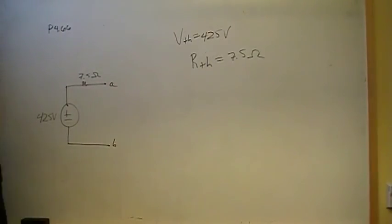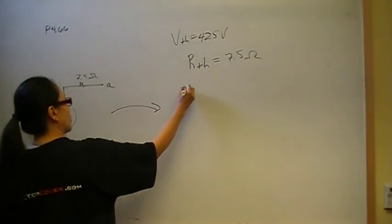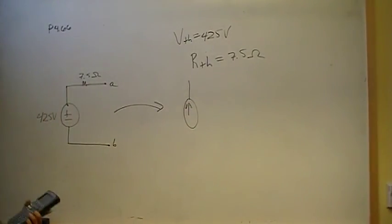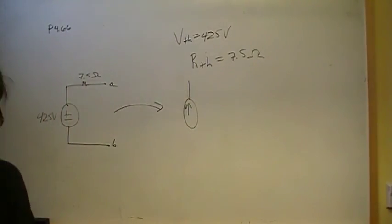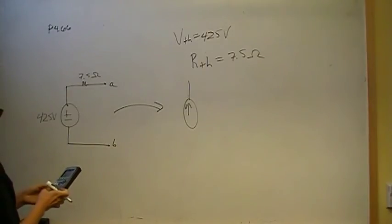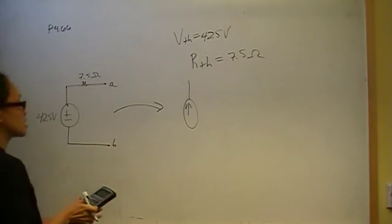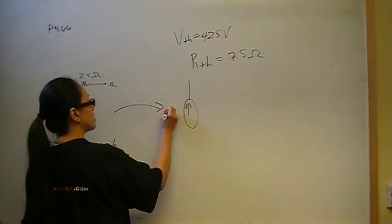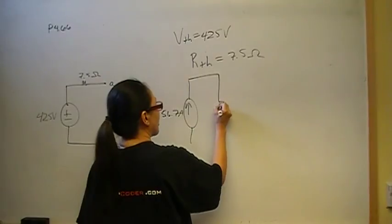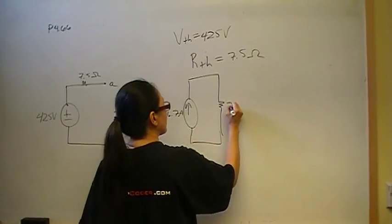And just because you should know it, the Norton equivalent circuit is its source transformation. So the Norton equivalent circuit is going to be V-Thevenin over R-Thevenin. And that gives me 425 divided by 7.5, 56.7 amps in parallel with 7.5.